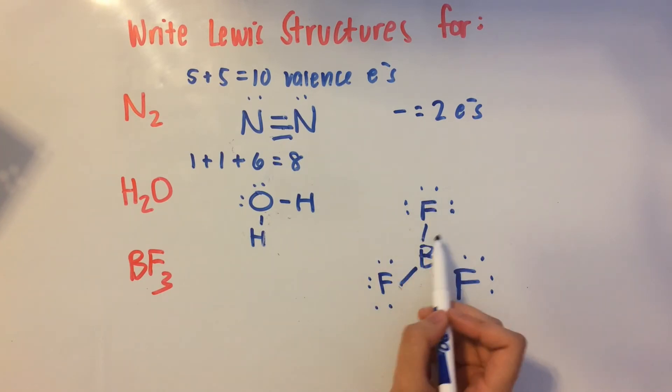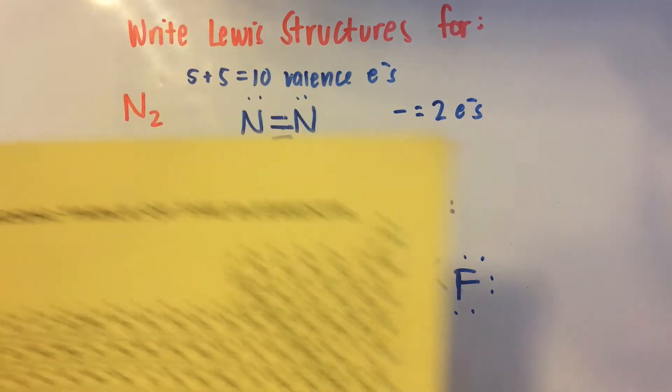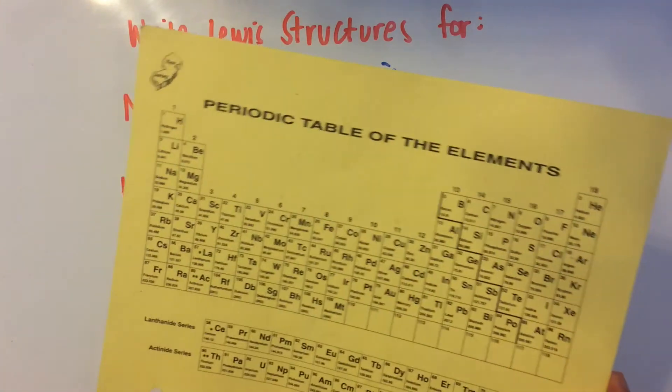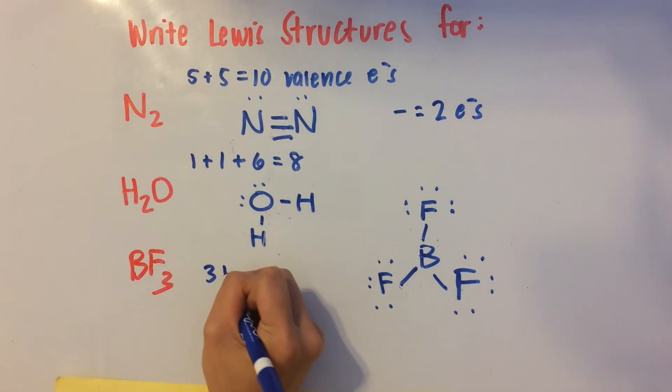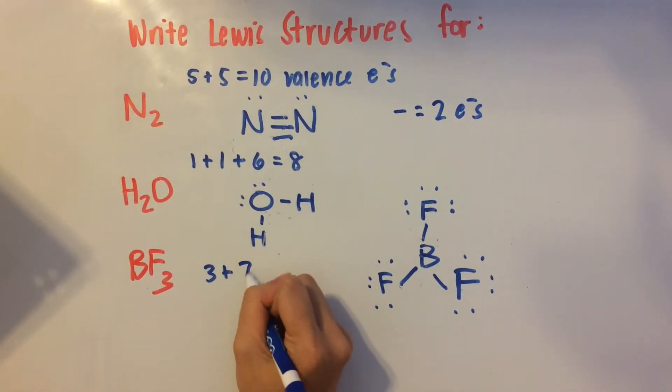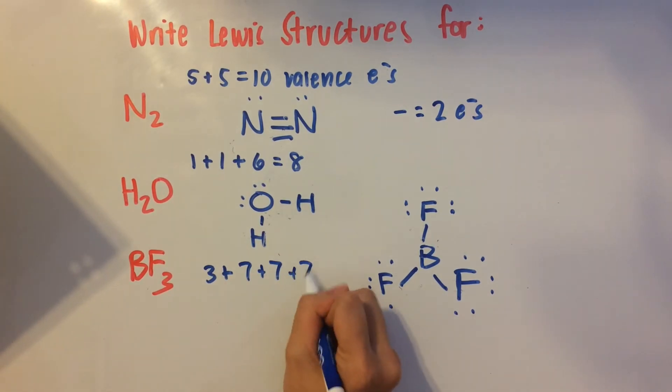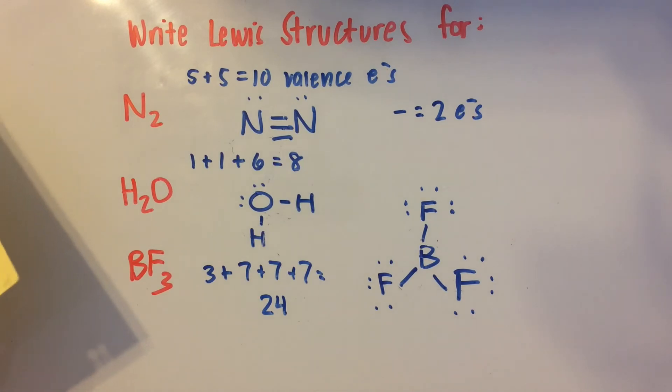So boron fulfills its rule because it's an exception. It only needs six. Fluorine, one, two, three, four, one, two, three, four, one, two, three, four. Fluorines have an octet. Now let's count the number of valence electrons. Oh, and I forgot to calculate the amount that you need. So boron is over here. It has three valence electrons. Then you have three fluorines. Each of them have seven. So one, two, three. And that totals to 24 valence electrons.